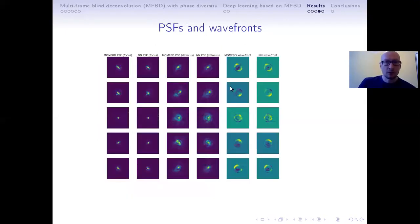Now, if we look at the corresponding wavefronts and point spread functions, we see that qualitatively the results are matching quite well. However, for the defocus point spread function, the differences between the state-of-the-art method and neural network are bigger. So there is definitely room for improvement.